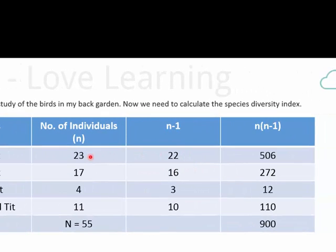In the next column, we're going to subtract one from each of the numbers that are observed for each species. And in the third column, we multiply these two numbers together. So, 23 times 22 gives 506, 17 times 16 gives 272 and so forth.